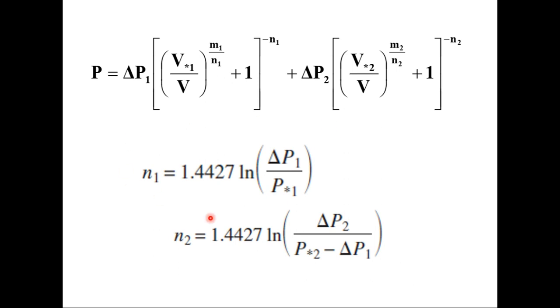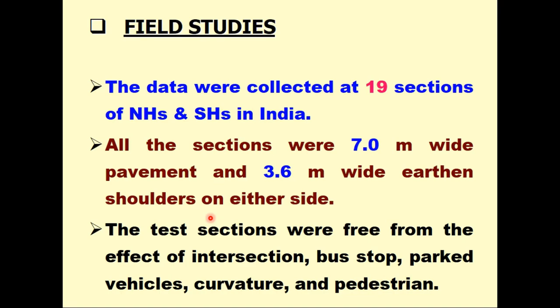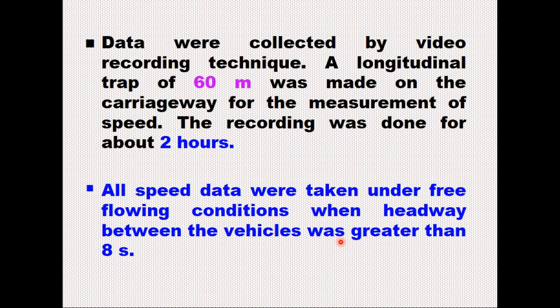To illustrate this concept further, let us take an example. We collected field data on 19 sections of national highway and state highways in India. All these sections were 7 meter wide pavement and 3.6 meter wide paved shoulders on either side. The sections were free from the effect of intersection, bus stop, parked vehicle, curvature and pedestrian, that is the requirement to have the uninterrupted flow on the section. Data were collected by video recording technique. A longitudinal trap of 60 meter was made on the carriageway for the measurement of speed. Recording was done for about 2 hours. All speed data were taken under free flow conditions when headway between the vehicles was greater than 8 seconds.